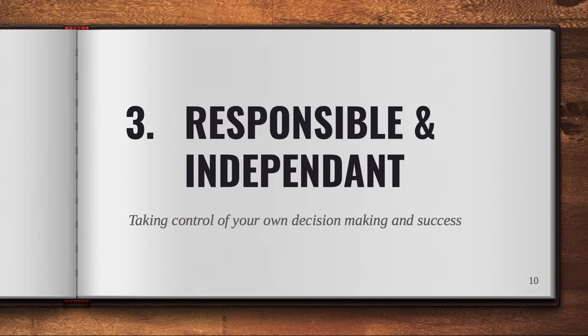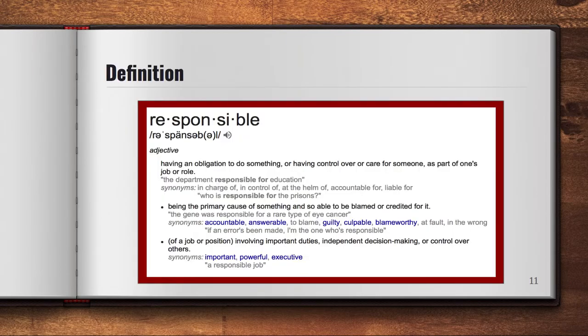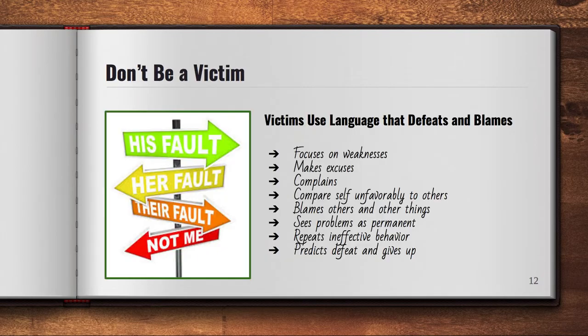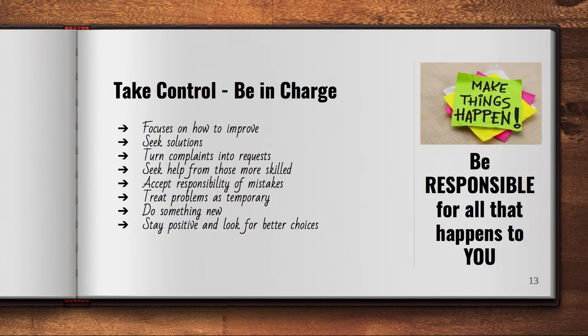Our third topic is being responsible and independent. We have a reading slide — go ahead and read the definition. Then we're focusing on the difference between being a victim and being a responsible, active participant. Read that slide, and then read the opposite — this is what we really want. That's a reading-only slide as well.